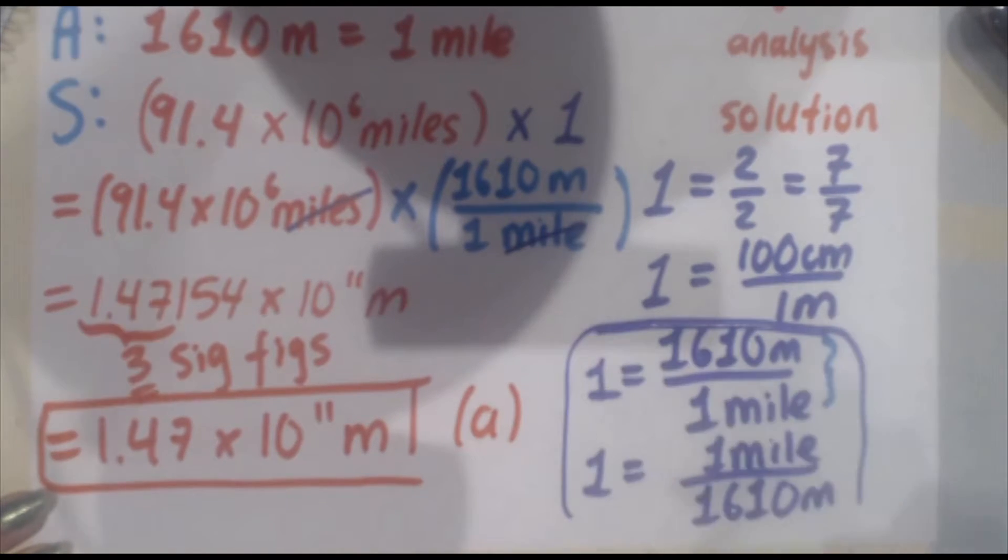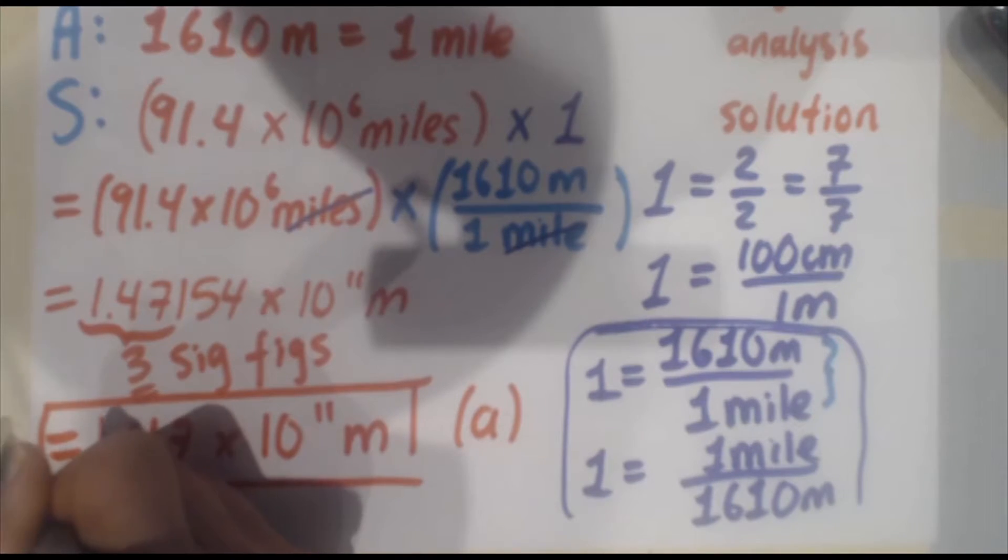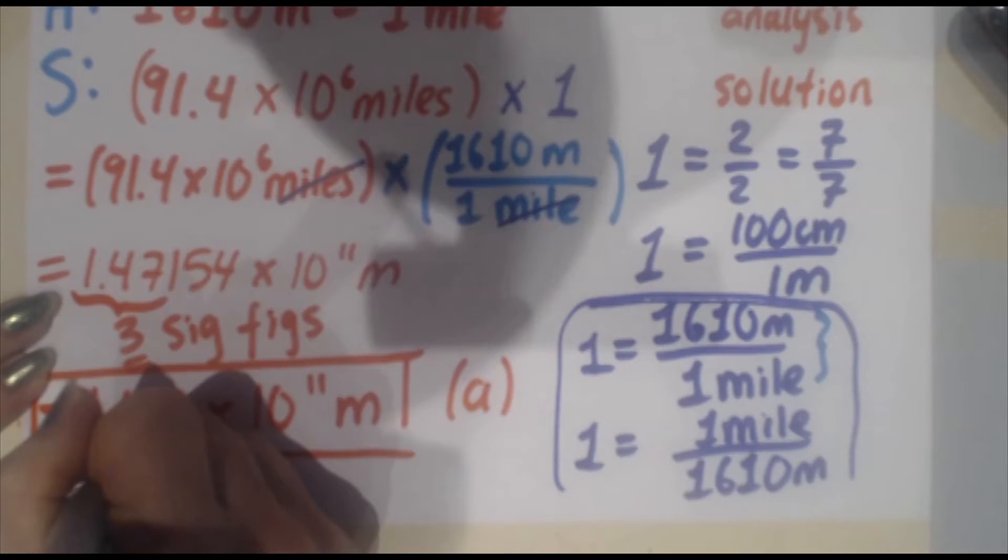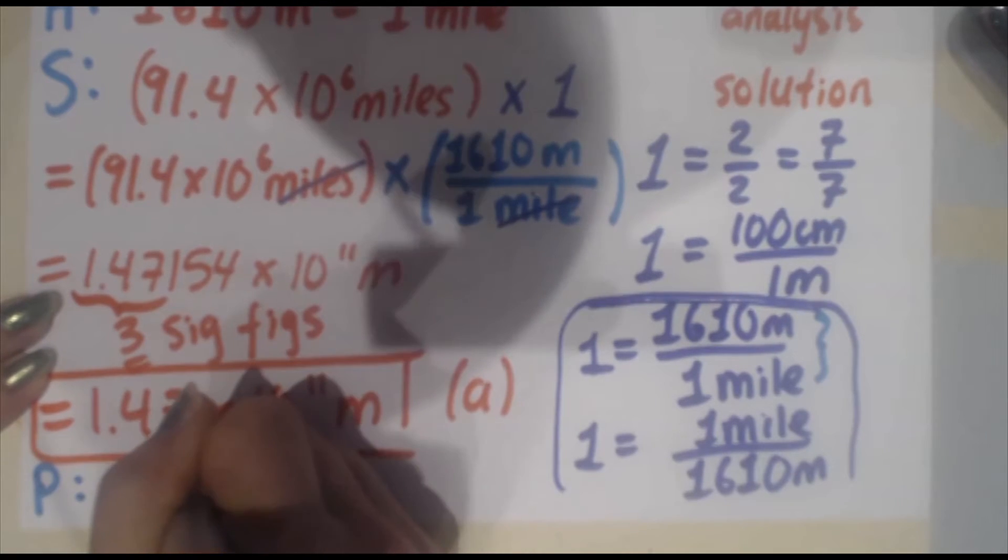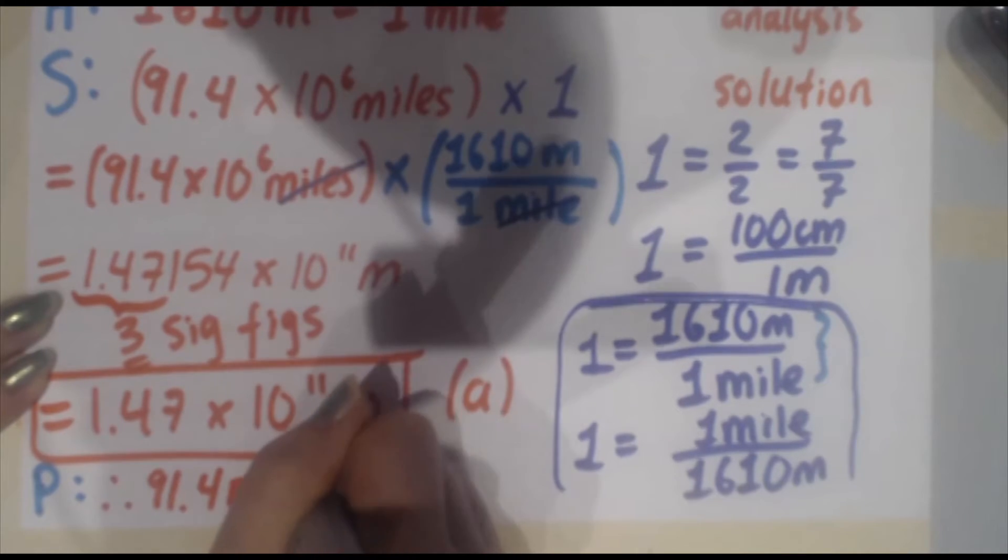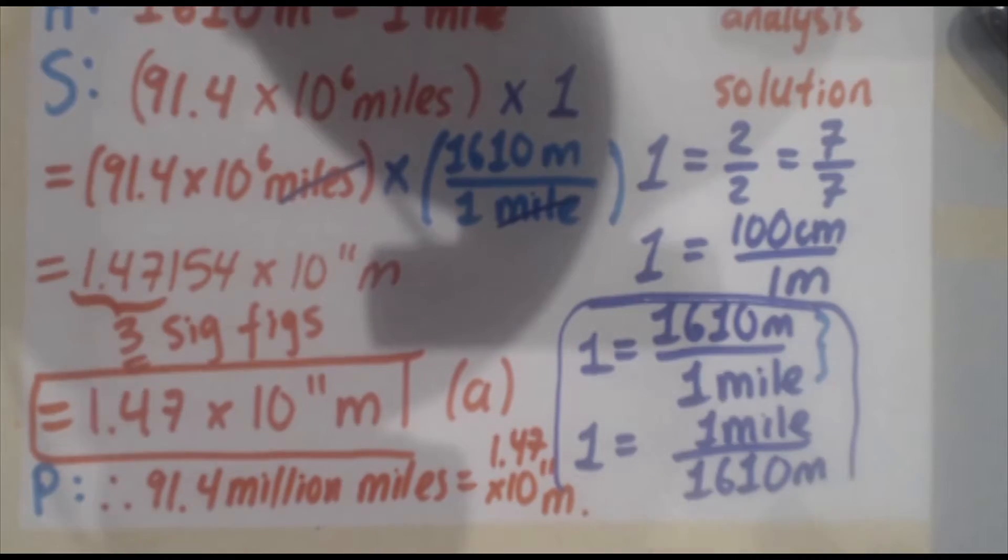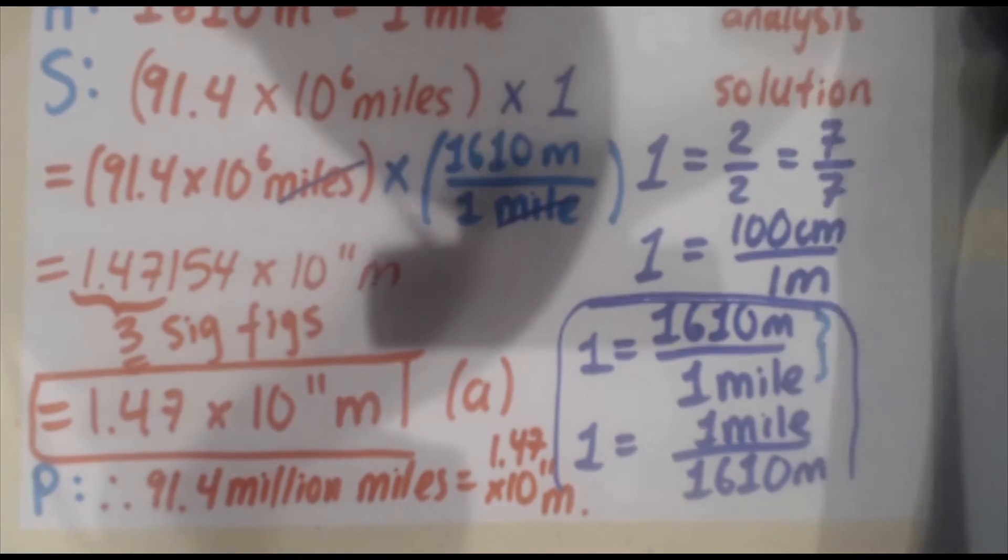That solves the problem for question A. How do you convert 91.4 million miles into meters? Now in case you're wondering, remember how I said this is the formula for grasp? That final P, some people say grasp, I use grasp. The final P is your therefore statement. Obviously, this problem, you don't really need to state it. But if you're doing this on a test, you want to write your therefore. Therefore, 91.4 million miles equals 1.47 times 10 to the 11 meters. That solves part A.